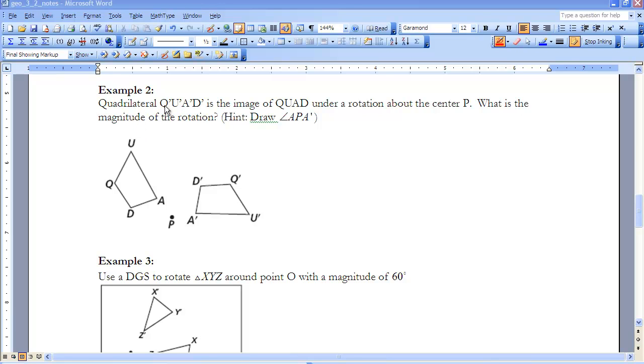So here we have quadrilateral Q prime, U prime, A prime, D prime. So if I go ahead and label that, we know it's the prime, so we know it's our image, and it states here it's the image of QUAD, so I'm going to label that one as P, pre-image, under rotation about center P.